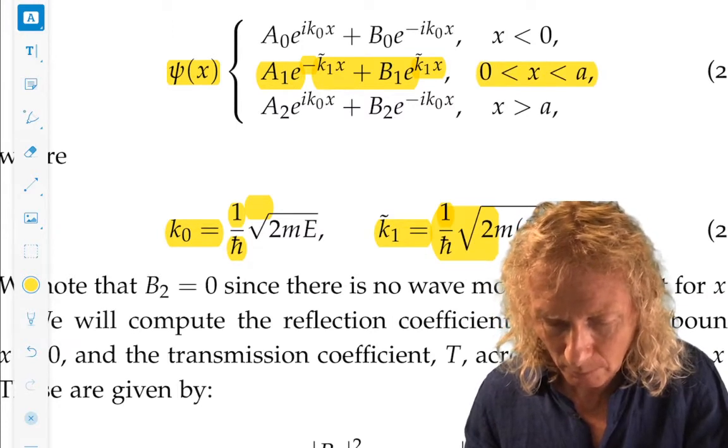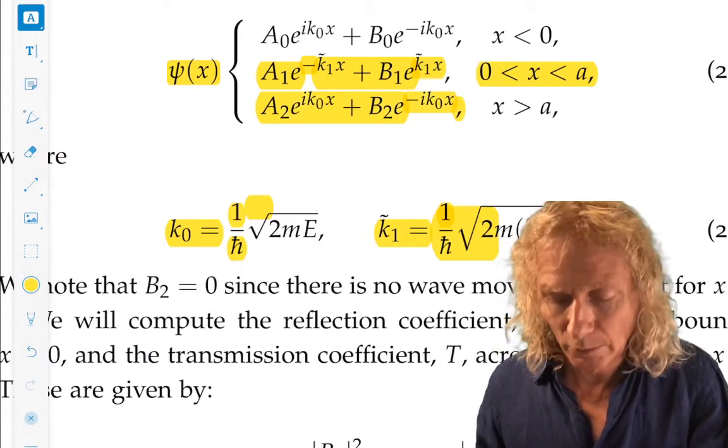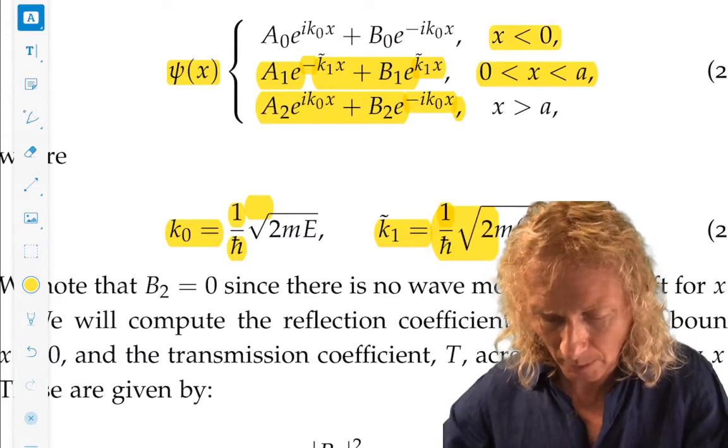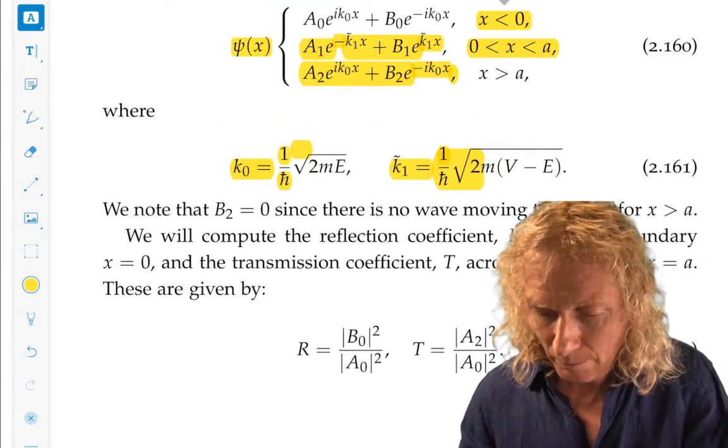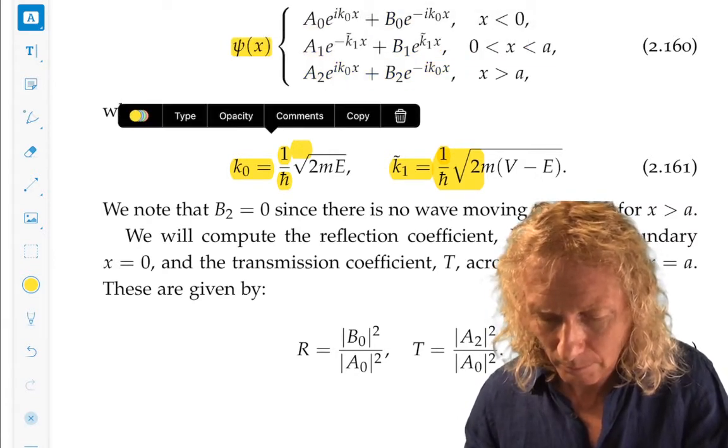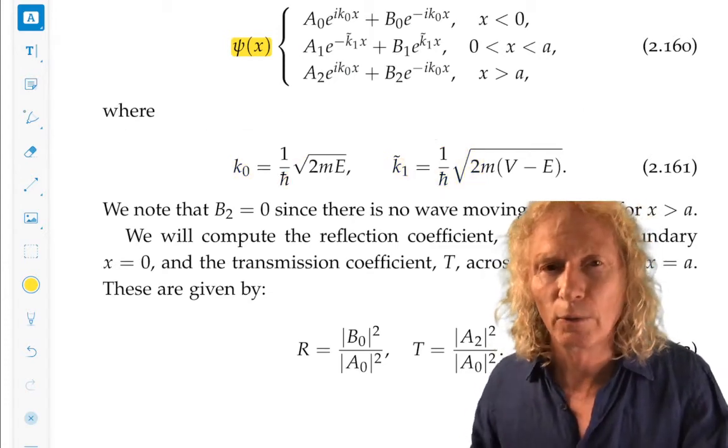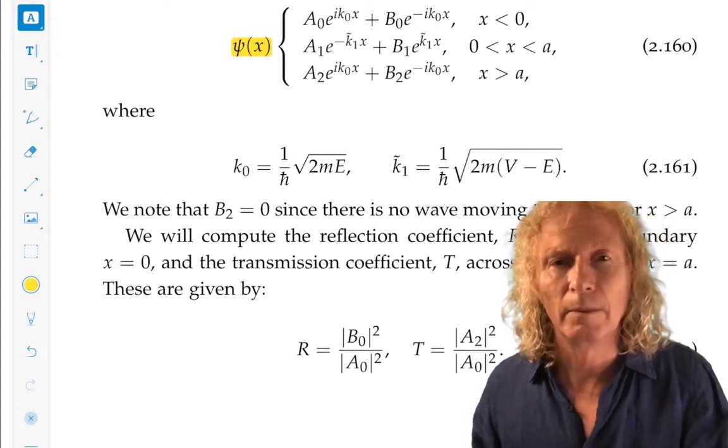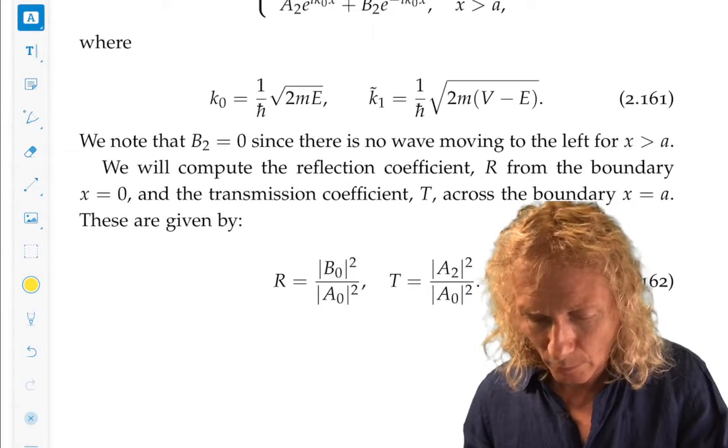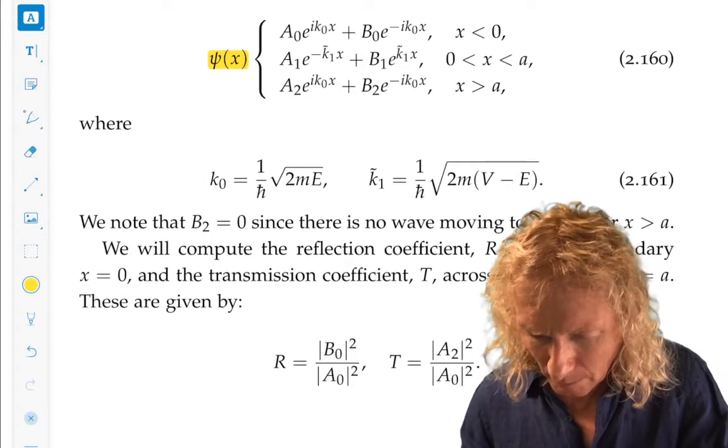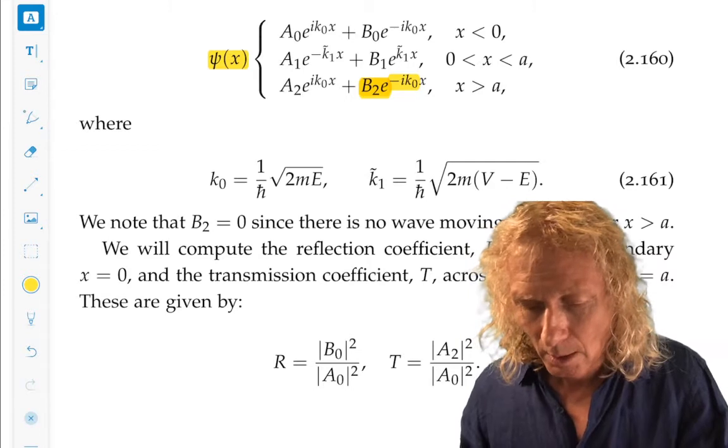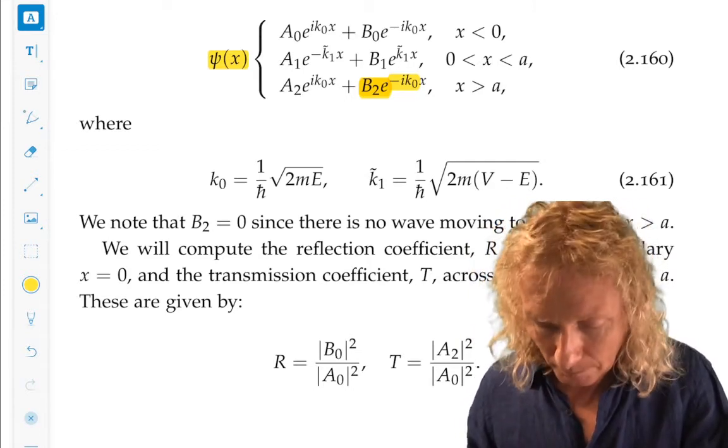We don't have to worry about any of these terms blowing up because it's only on a finite interval. The last region has no potential, V equals zero, and it's exactly the same form as the first region. We want to discuss reflection and transmission: reflection off the left-hand side of the barrier and transmission through the right-hand side.